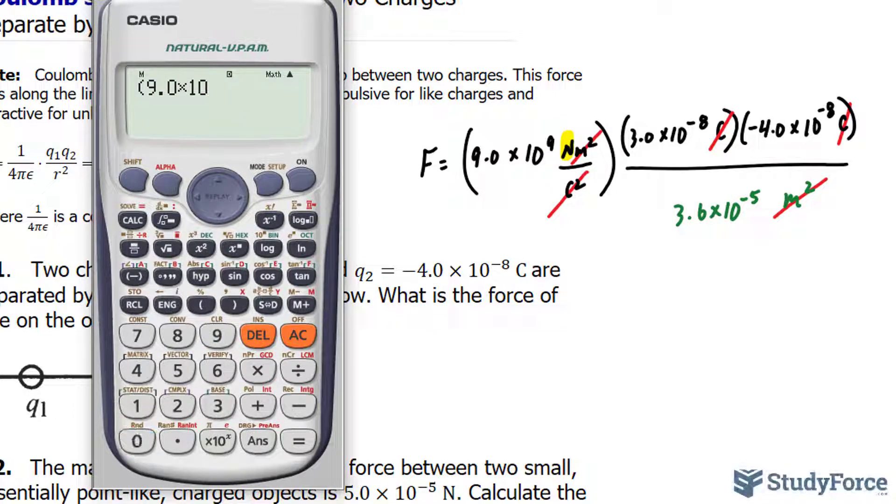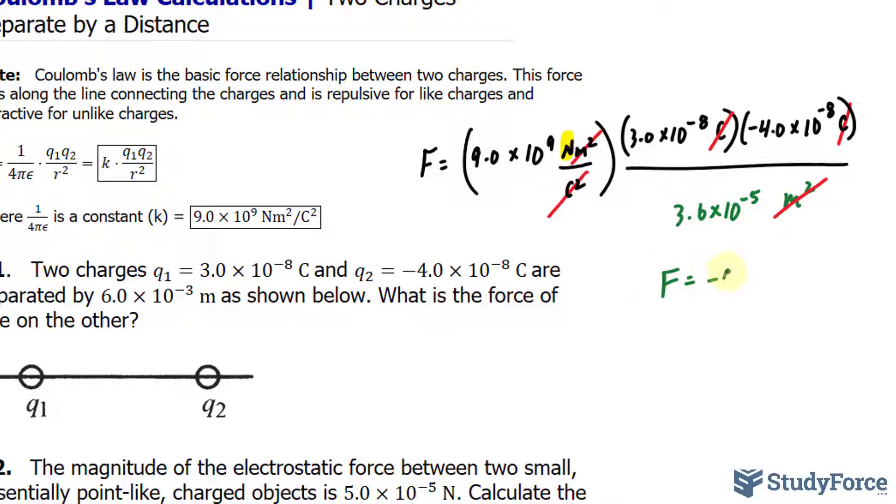I'll show you how to do this on your calculator. This is very important because a lot of students make mistakes inputting this. So that number times 3.0 times 10 to the power of negative 8. Make sure that you put every factor in parentheses, especially if you have a scientific calculator like mine. That's the numerator divided by 3.6 times 10 to the power of negative 5. And we end up with negative 0.30 newtons.